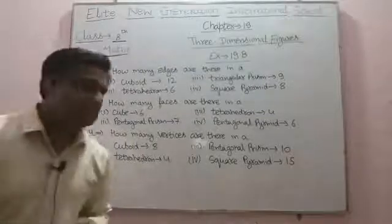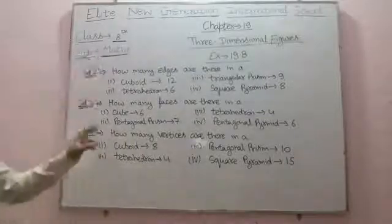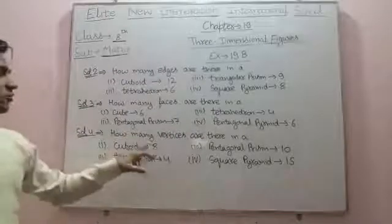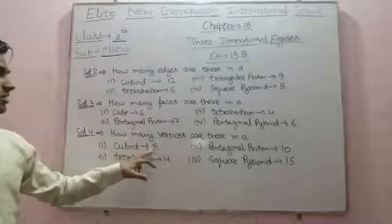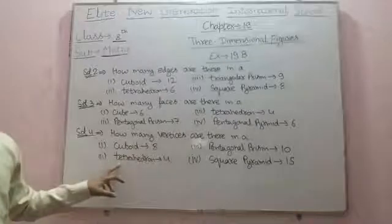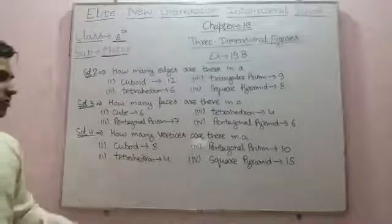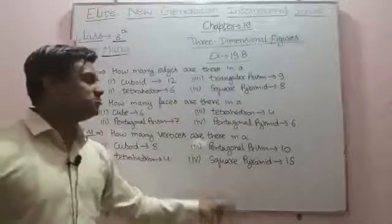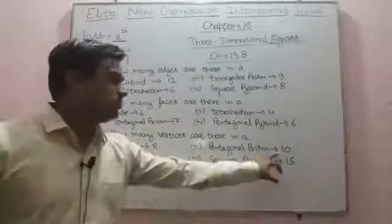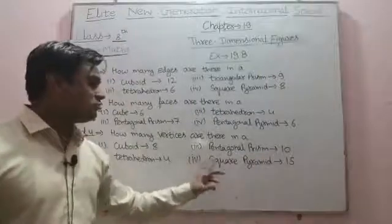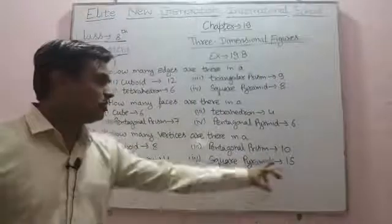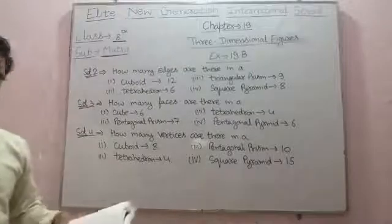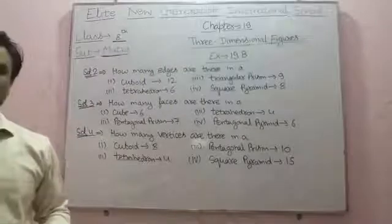In question number 4, we have to tell how many vertices are there. In a cuboid, the total number of vertices are 8. In a tetrahedron, the total number of vertices are 4. In a pentagonal prism, the total number of vertices are 10, and in a square pyramid, the total number of vertices are 15.